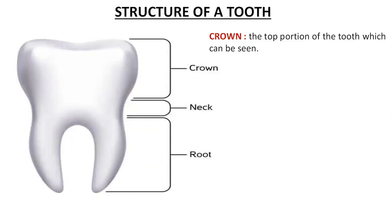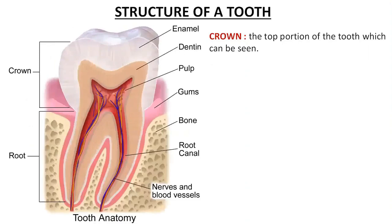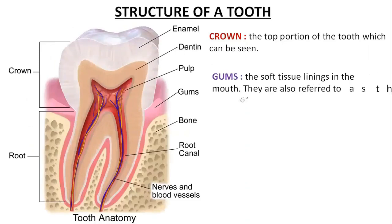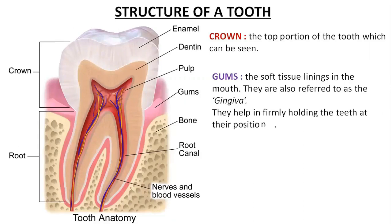Now, do you understand the term gums? Gums are nothing but the soft tissue linings in the mouth. They are also referred to as gingiva and they help in firmly holding the teeth at their position. Healthy gums are pink and they keep the teeth tightly anchored.